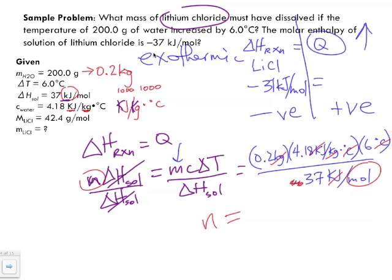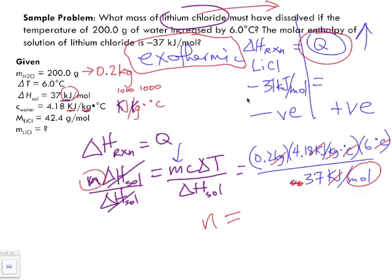Remember, the delta H of solution being negative 37 kilojoules per mole told us we had an exothermic reaction, meaning energy was released by the lithium chloride to the water. As a result of lithium chloride releasing heat to the water, the water's temperature increased by six degrees Celsius.